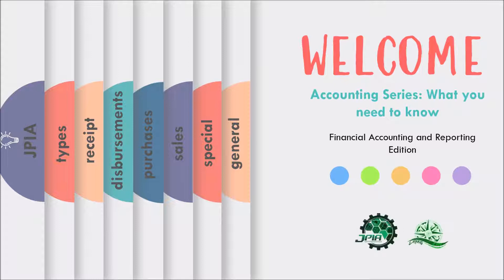Again, as a refresher, journalizing is a process of recording economic events in the books of original entry called the journal. This economic event, otherwise known as transactions, are recorded using the double-entry bookkeeping system. Under this system, transactions are recorded in two-fold effects, which are the debit and the credit. Take note that in recording the business transactions, the entity may adopt the use of the general journal only or the use of special journals.